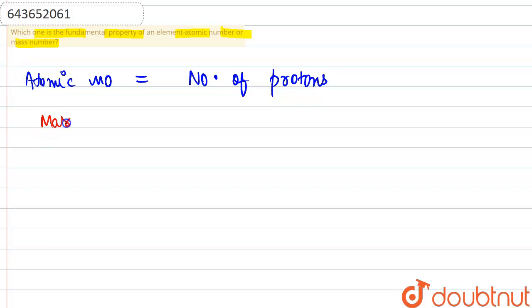Mass number is equal to the number of protons plus the number of neutrons.